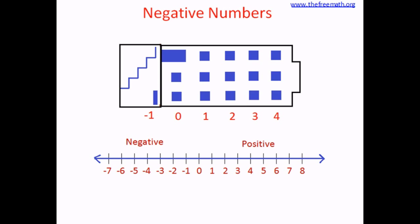When you write positive numbers, you can either write a plus sign before the number or write the number without any sign — no sign means it is the same as a plus sign. If a number is negative, you write a minus sign before the number to indicate that it is negative.